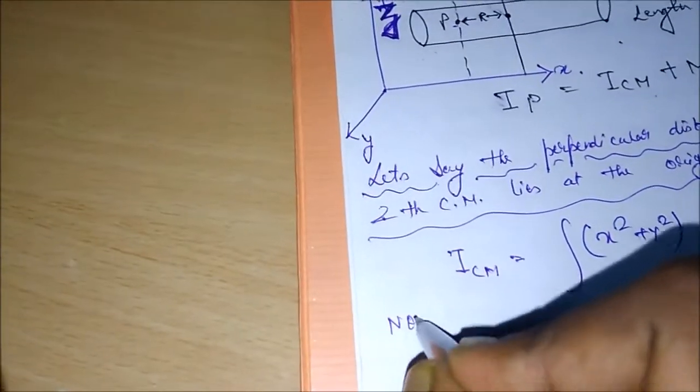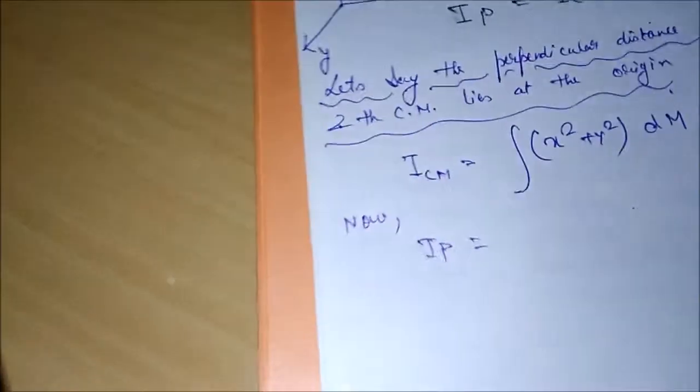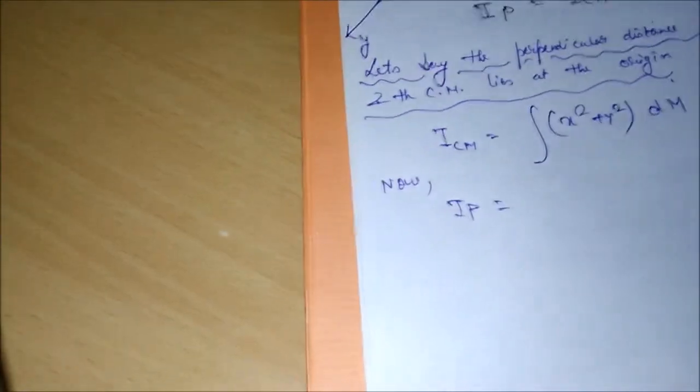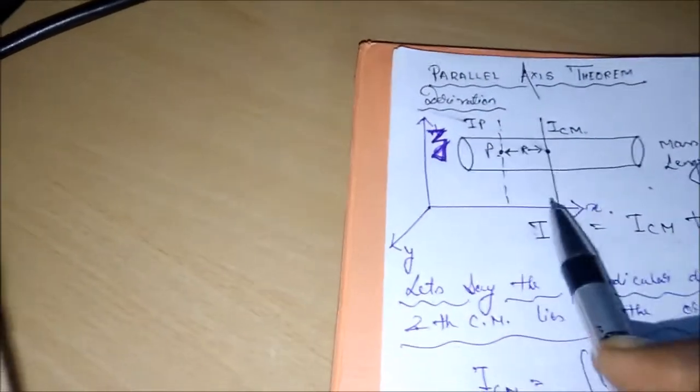So now, Ip: again using calculus we can say that instead of, right now the x-axis has increased by R, initially it was just (x² + y²) but now the coordinates has moved towards R.